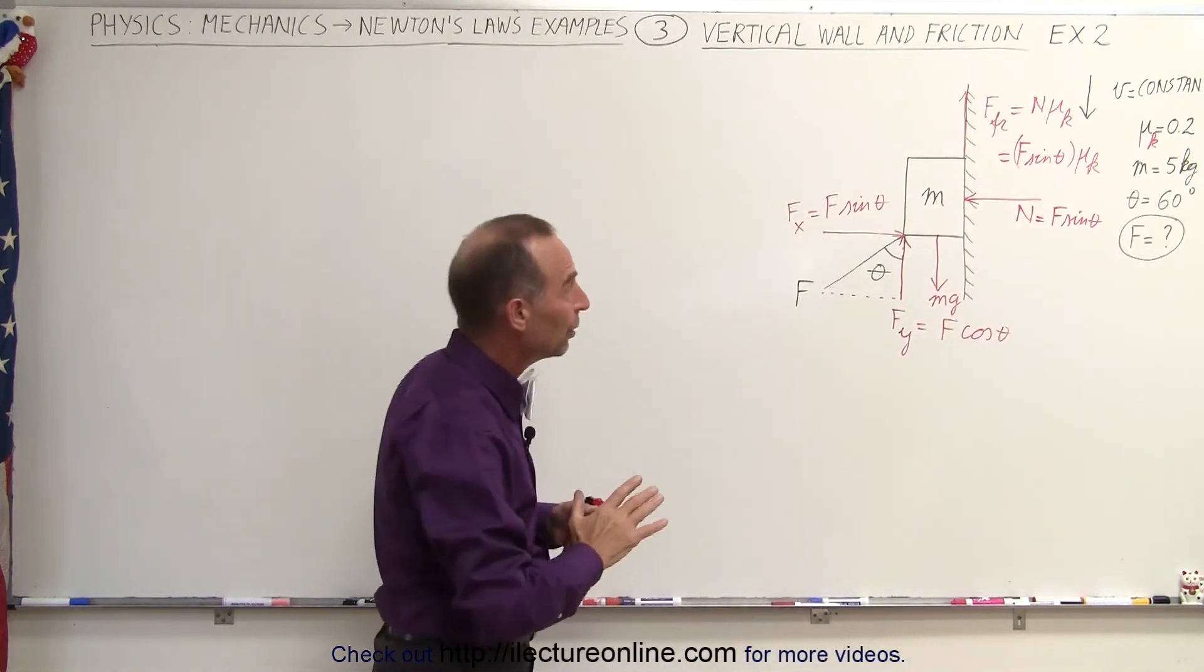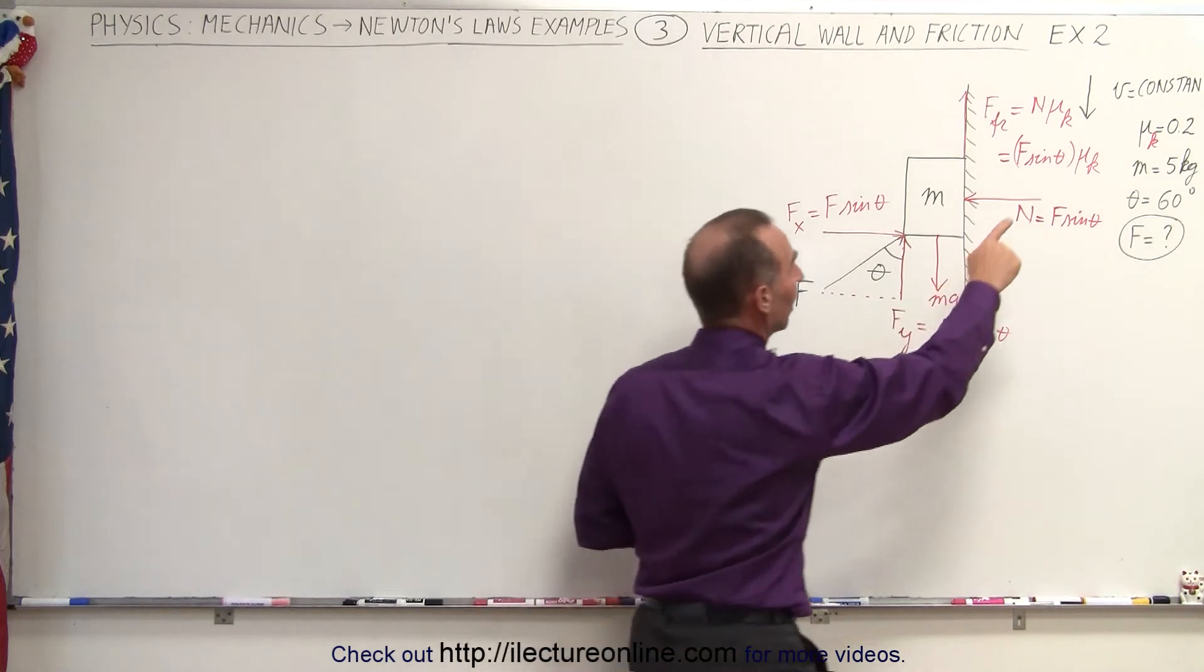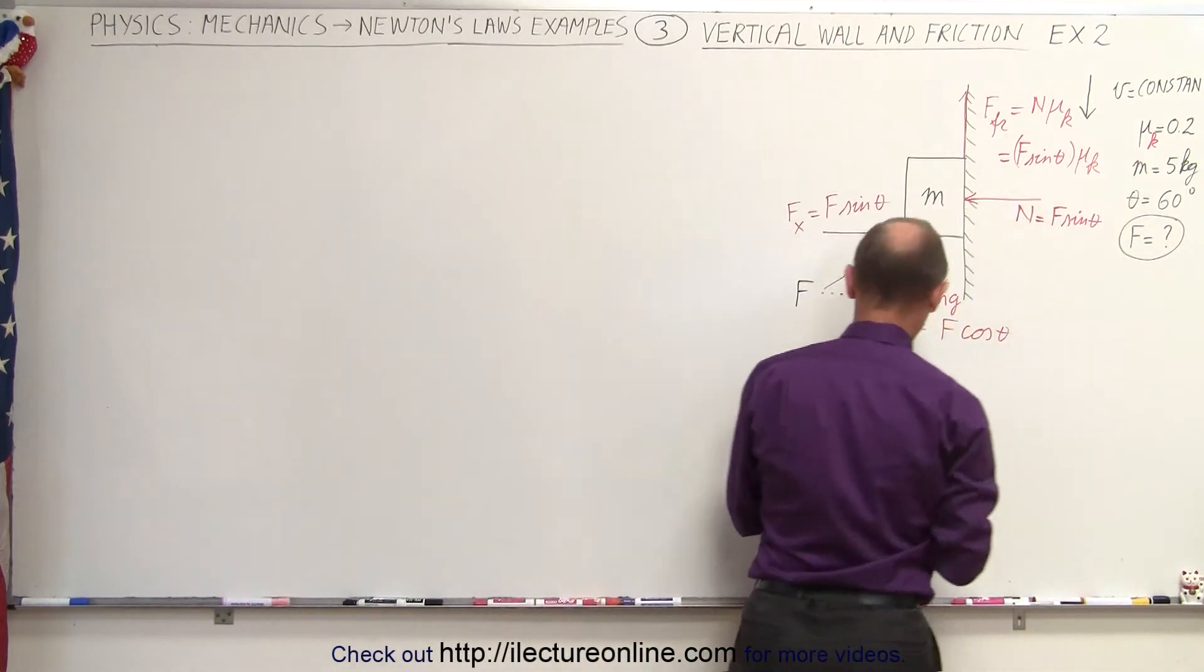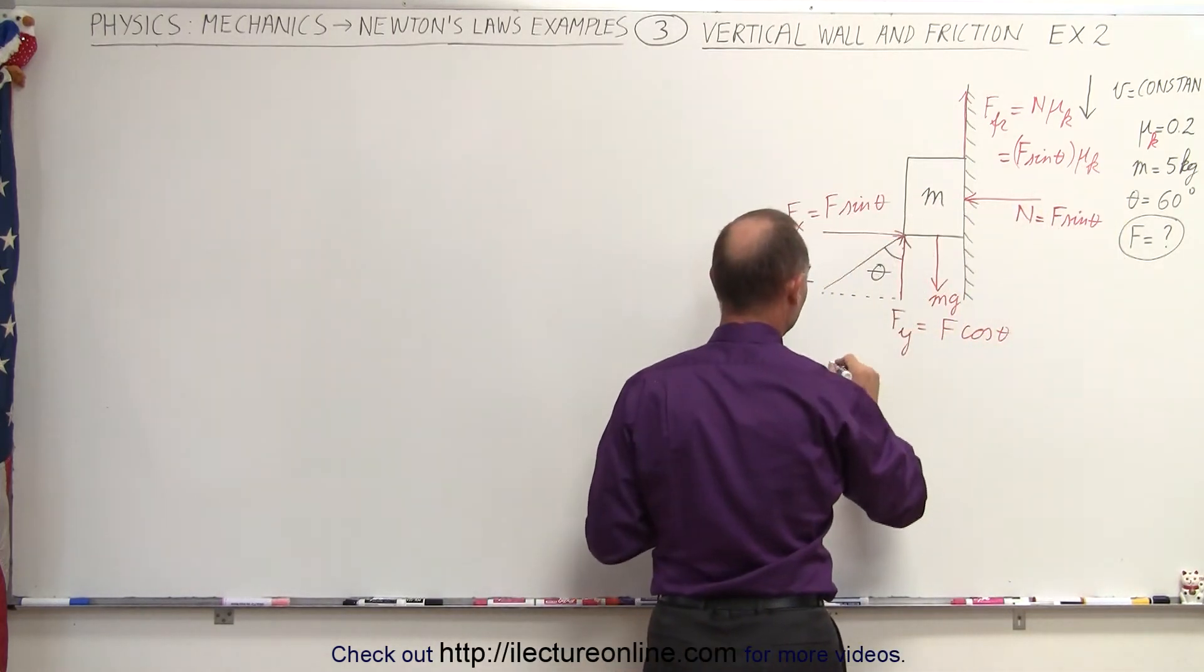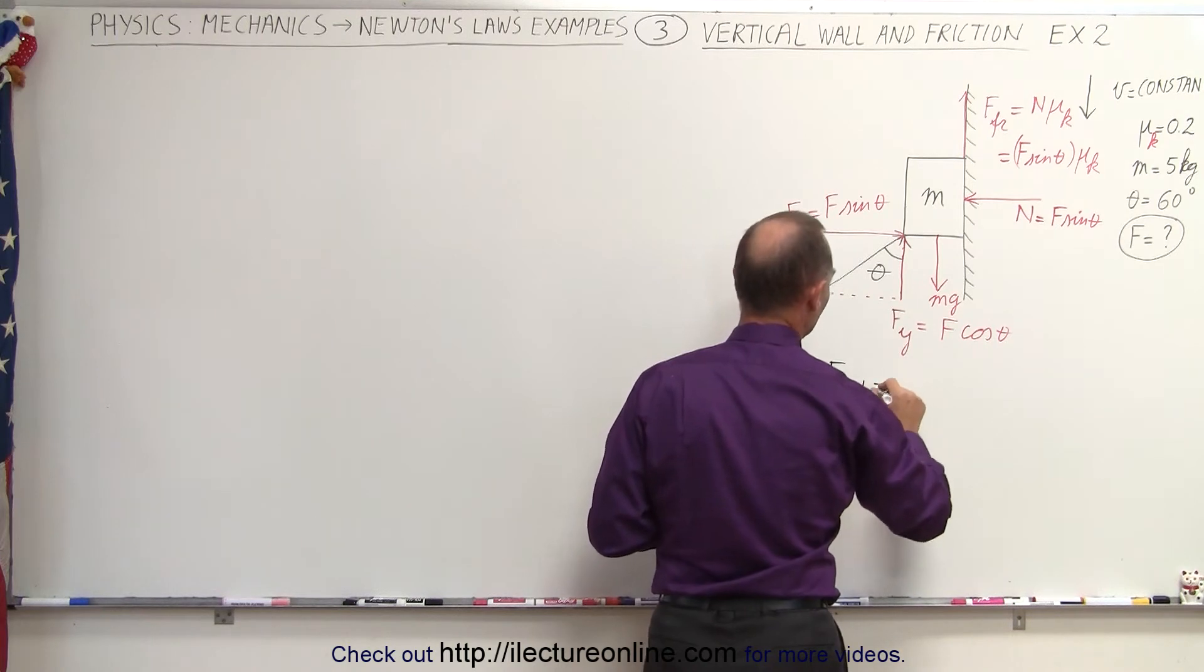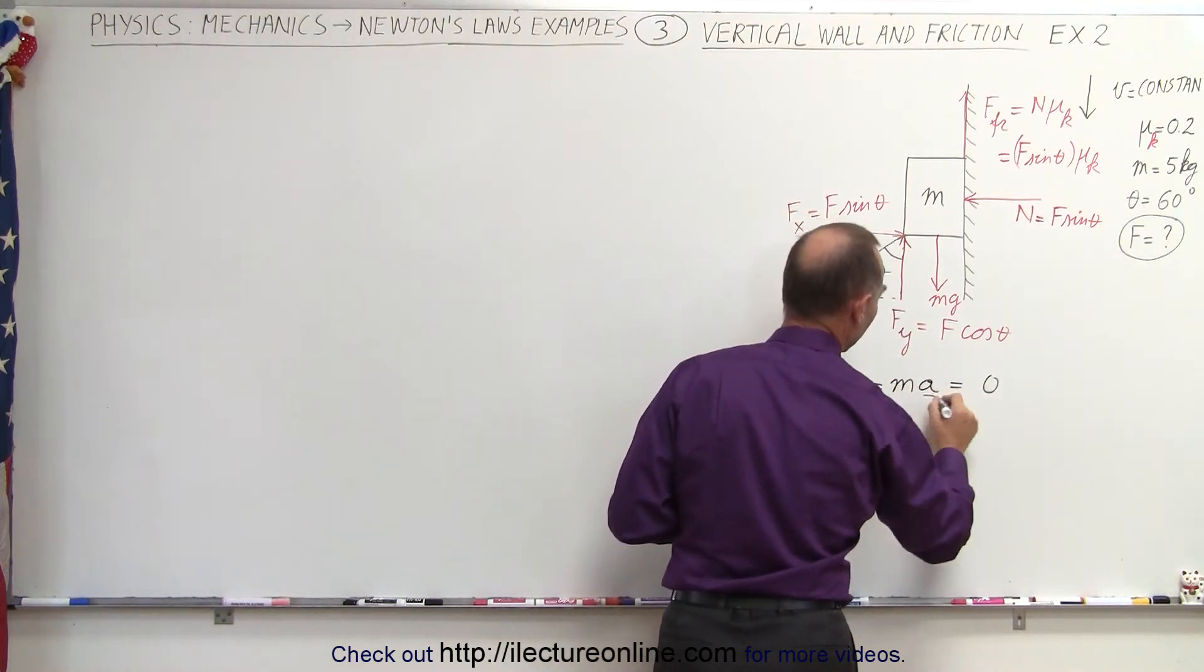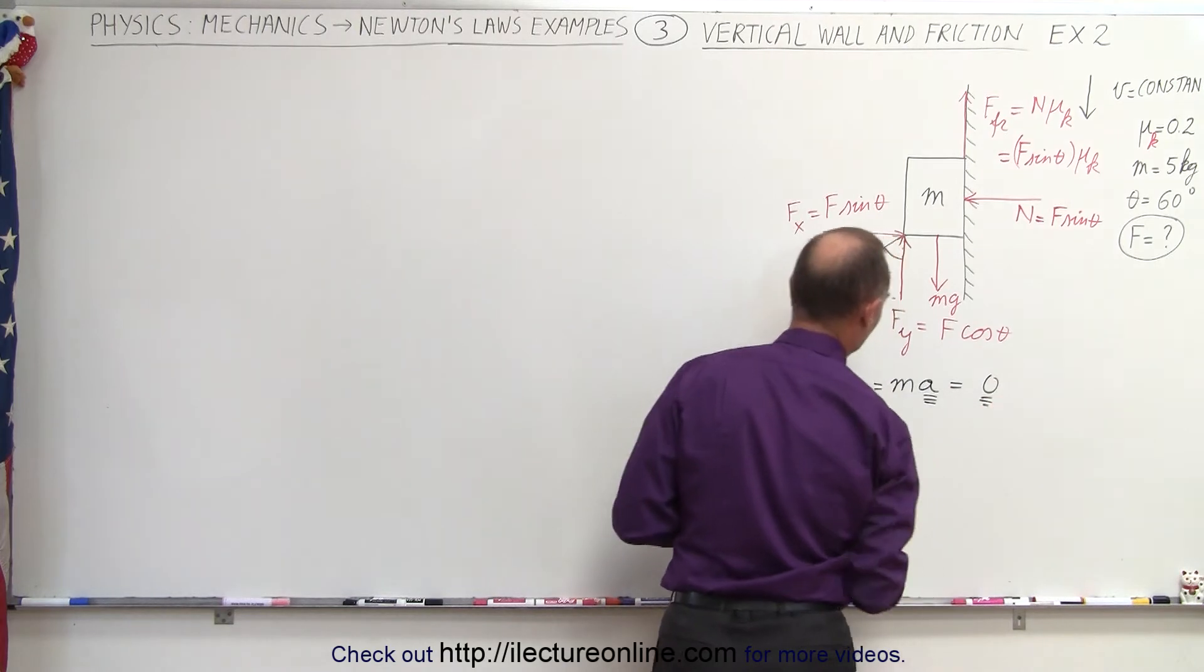And again, the second big point is that since we have a constant velocity, there's therefore no acceleration. So we can write that f net, which is equal to the mass times acceleration, must equal zero, because the acceleration is equal to zero, which means the net force must equal zero as well.